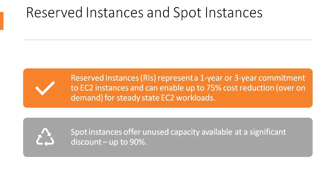An alternative purchasing model is EC2 Spot. Spot instances offer unused capacity at a significant discount of up to 90%. Spot instances receive a two-minute warning when the capacity is required back by EC2 and can be suspended and resumed. An application requires no modifications to make use of spot instances, though burstable workloads such as web apps may require some modifications around how they are deployed.